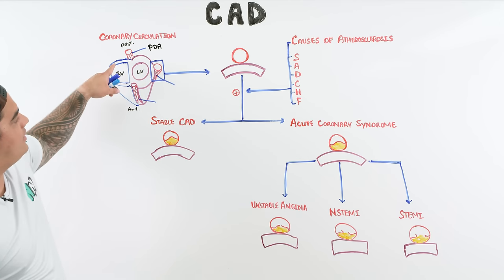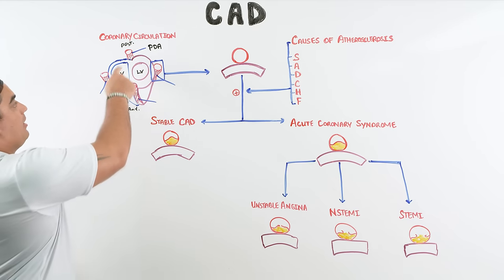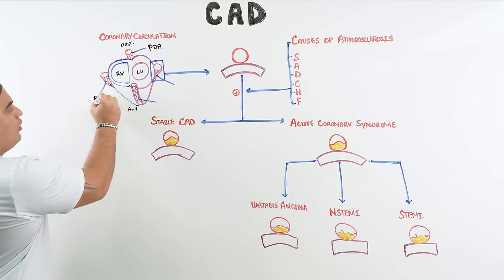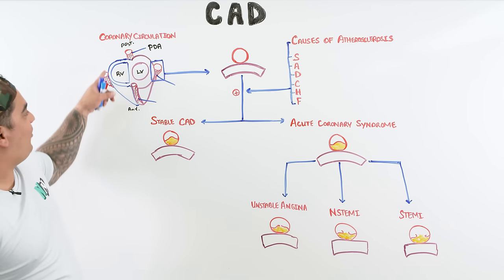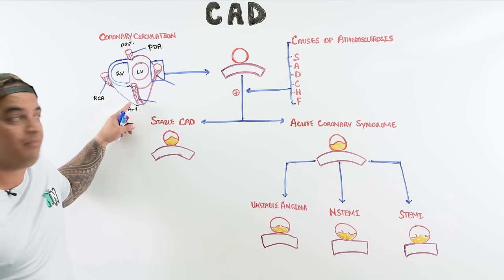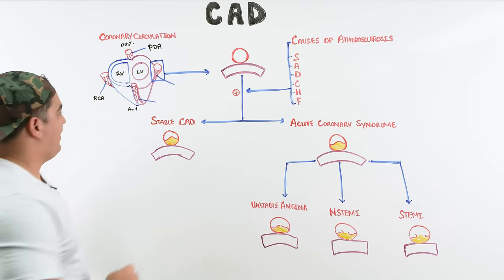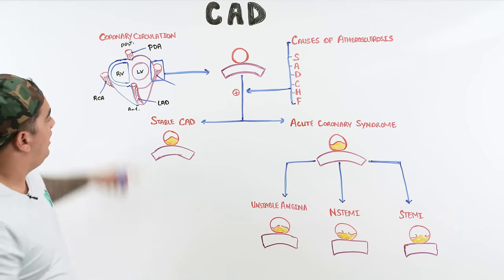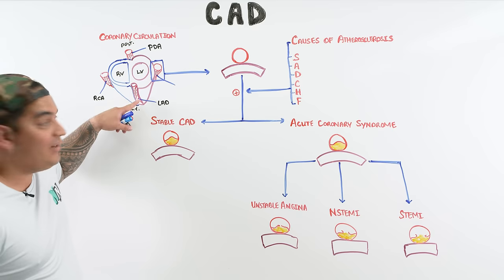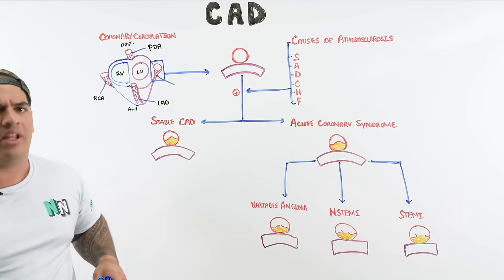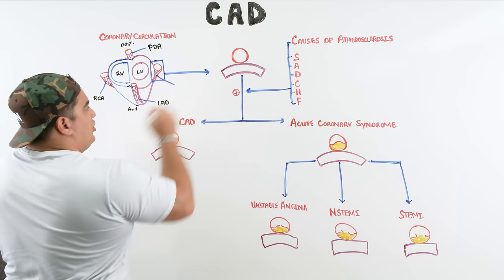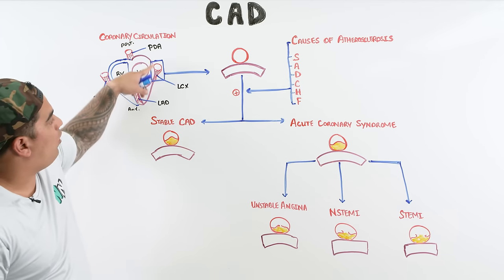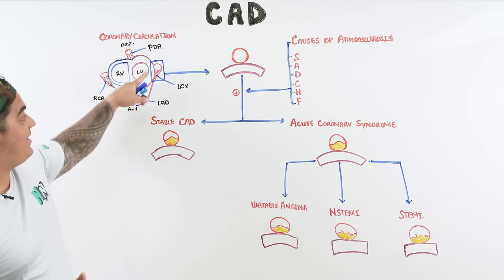The PDA supplies the posterior portion of the heart — a little of the right ventricle and a little of the left ventricle. On the right side is the right coronary artery, which supplies the right ventricle and parts of the inferior left ventricle. The big daddy is the LAD — left anterior descending artery — which supplies the septum, anterior wall of the left ventricle, and part of the lateral wall. The left circumflex artery, LCX, supplies the lateral wall of the left ventricle.